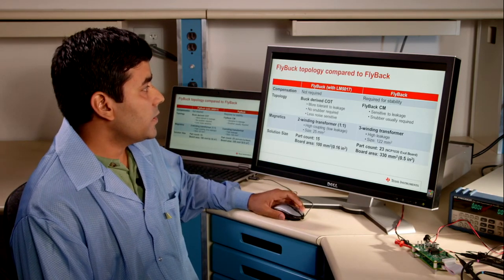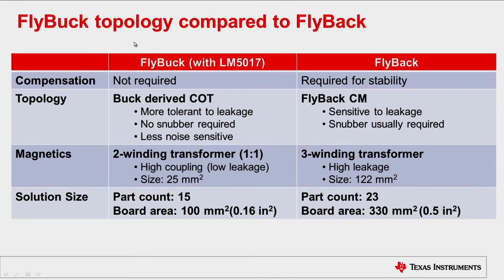In this slide, we compare a 3-watt isolated bias solution, one utilizing an LM5017-based FlyBuck converter, and the second one utilizing a FlyBack topology. The FlyBuck converter, because it's based on constant on-time control scheme, does not require a compensation design.